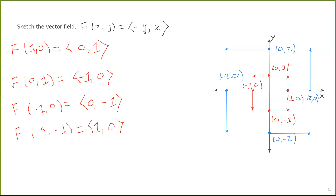The farther you go along the positive x-axis, you get vectors that are pointing up and they're going to be longer and longer. The farther you go up the positive y-axis, you get vectors pointing to the left that are longer and longer. Conversely, closer to the origin, vectors point upward or to the left but are short.